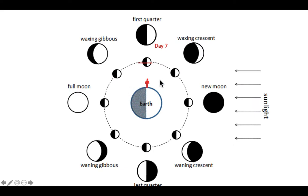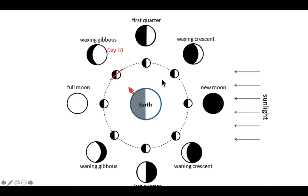Around one week into the lunar cycle, this man is now standing at six o'clock in the evening — right about when day turns into night. If you look up at around 6 p.m. on day seven of the lunar cycle, you will see the bright side still on the right, and about half of the lunar disk that you can see in the sky will be lit up. We call this the first quarter. Now we're going into our nighttime moons.